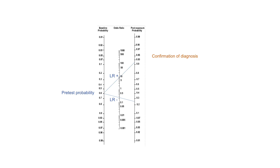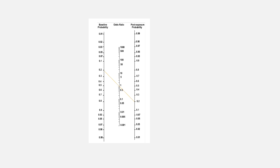Positive likelihood ratio helps in confirmation of disease; negative likelihood ratio helps in ruling out disease. We also have a treatment threshold point on the scale of post-test probability. In our example, the post-test probability even of a negative test is above the treatment threshold point, so we can either start treatment or perform another test. If likelihood ratio is 1, it will not result in any change in pre-test probability, so for any level of pre-test probability, post-test probability will be the same as pre-test probability.